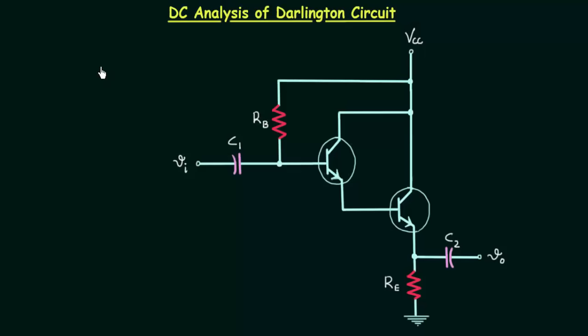We have sufficient knowledge of the Darlington pair and now we will perform the DC analysis of an amplifier circuit with the Darlington pair.